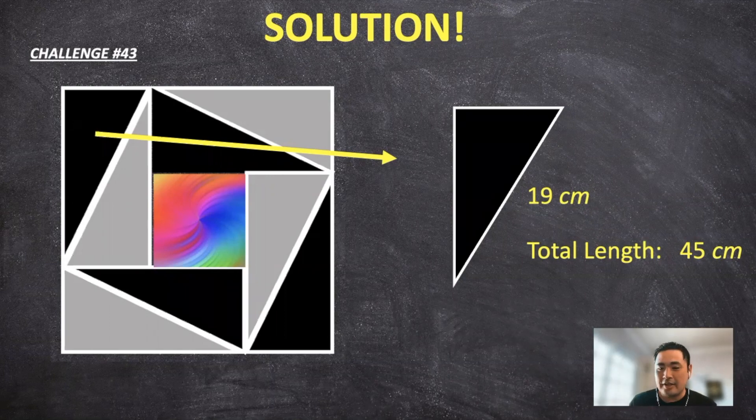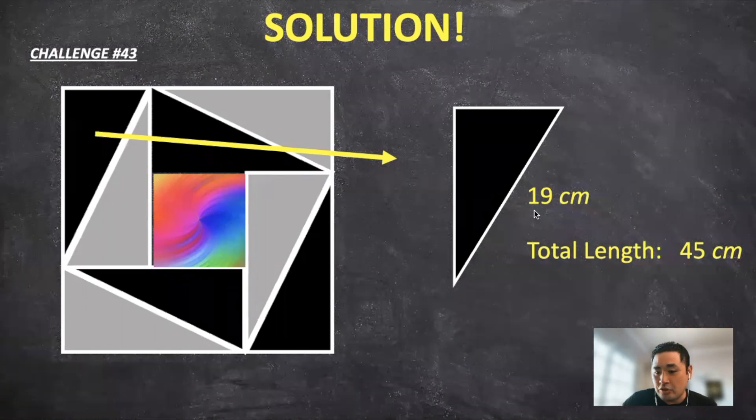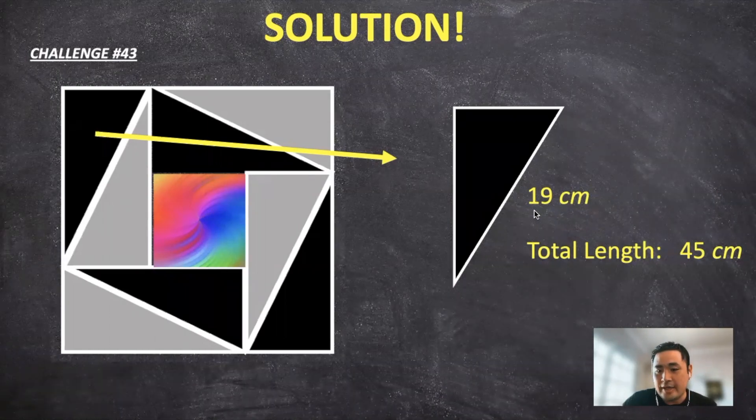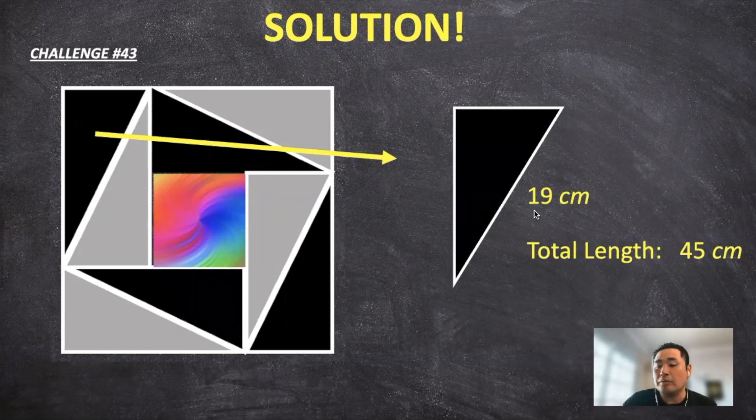All right, let's get started. So for this problem, it gives us the longest length of the triangle as 19 centimeters. Oh, I forgot to mention,